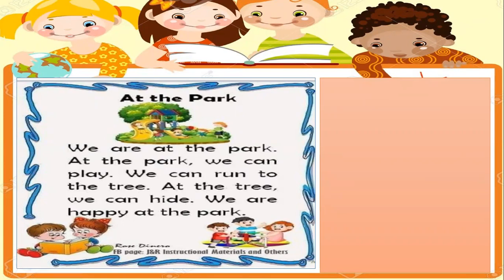So now let's read it together. In 3, 2, 1. At the park. We are at the park. At the park, we can play. We can run to the tree. At the tree, we can hide. We are happy at the park.